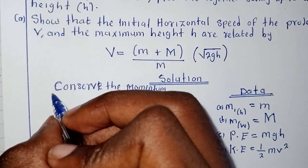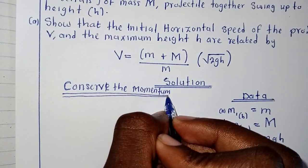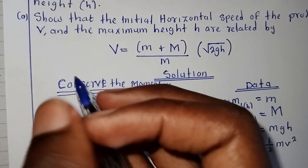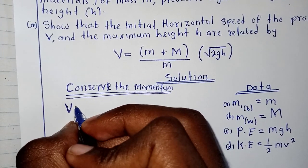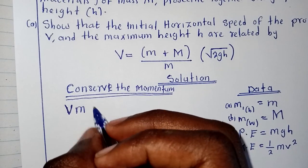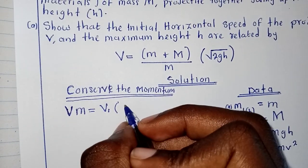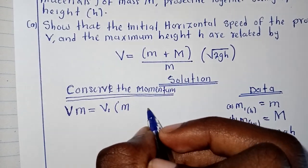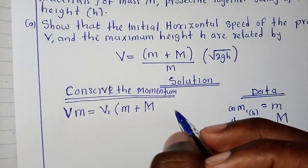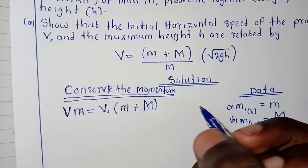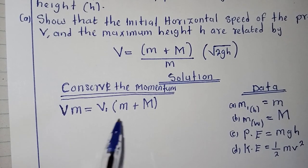To conserve the momentum simply means that V multiplied by m is going to equal to V₁ times m plus M, the mass of the wooden block. We've conserved the mass. Whatever is this side is also equal with this side.